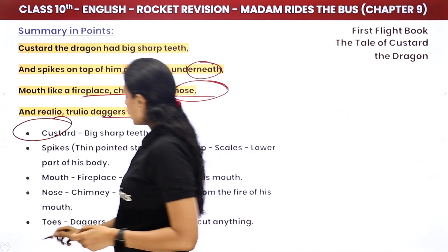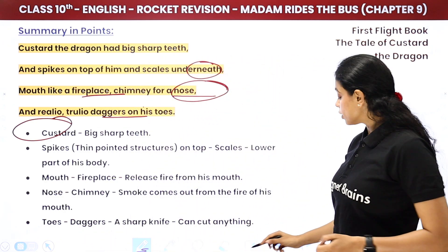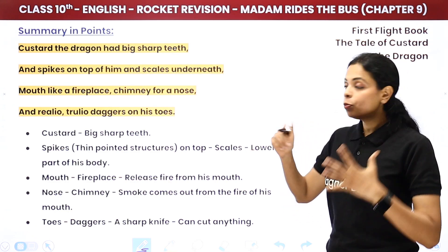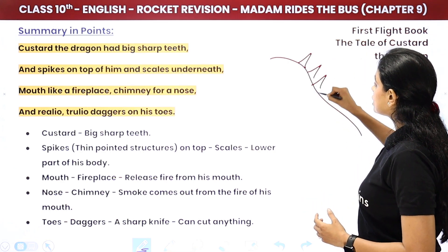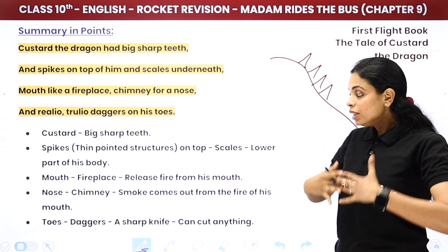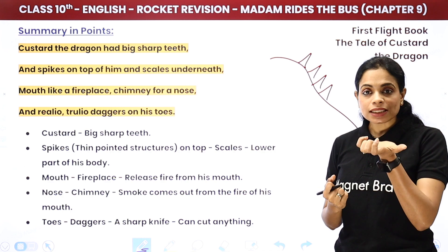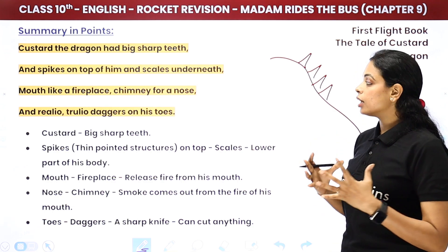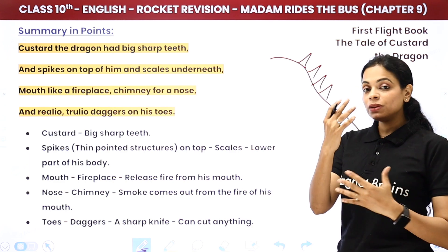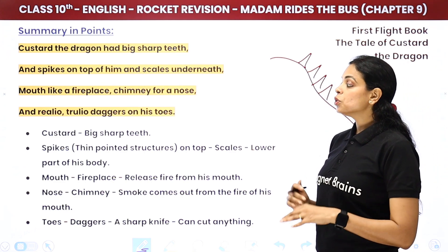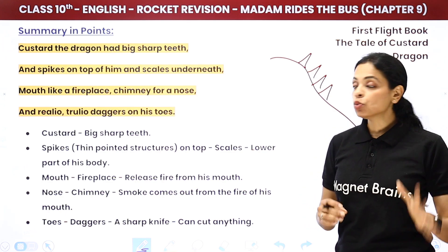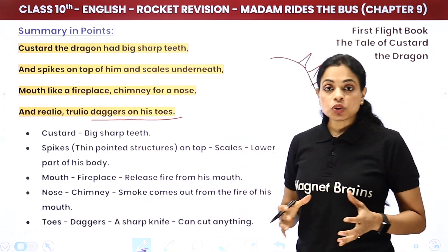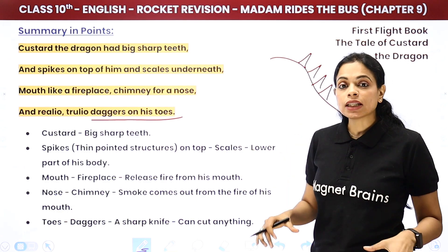Custard the dragon had big sharp teeth, and spikes on top of him, and scales underneath — like a snake's skin on the lower body. Mouth like a fireplace, chimney for a nose. And really, truly, daggers on his toes — meaning his toenails were so sharp they could cut anything.